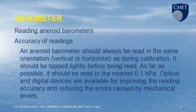Barometer reading — aneroid barometers. Accuracy of readings: an aneroid barometer should always be read in the same orientation, vertical or horizontal, as during calibration. It should be tapped lightly before being read. As far as possible, it should be read to the nearest 0.1 hPa. Optical and digital devices are available for improving reading accuracy and reducing errors caused by mechanical levers.